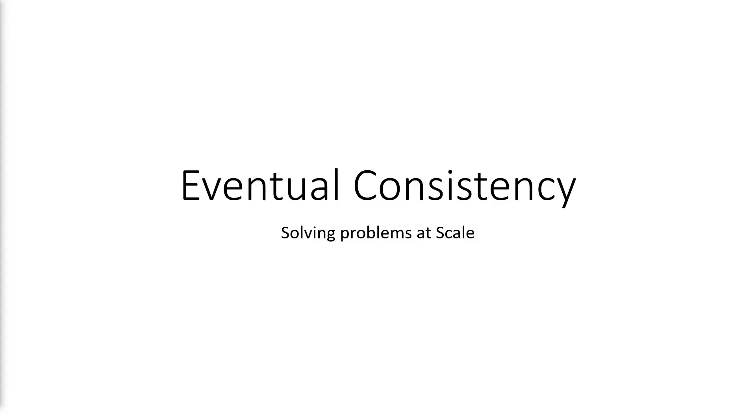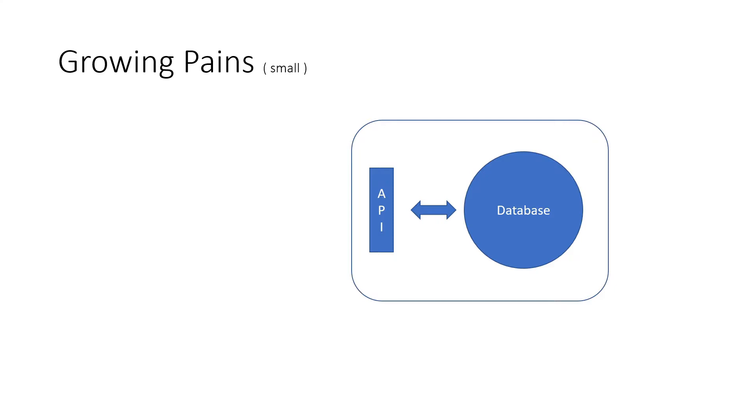Eventual Consistency: Solving Problems at Scale. Most software projects start out just like this. There's a database, there's an API, and these together become the backend.